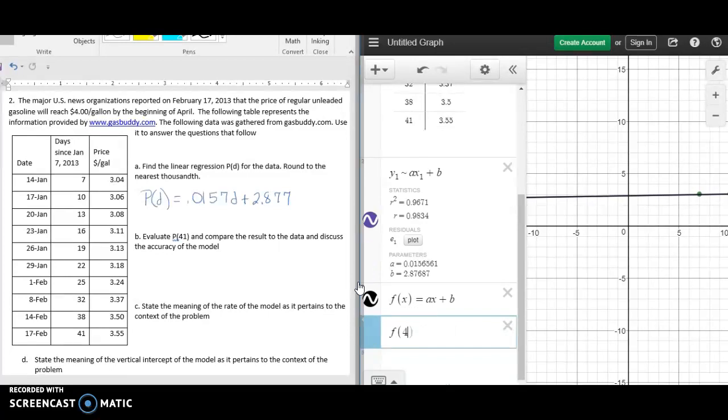Now we're going to evaluate the function at f of 41, and we get our answer of $3.52 based on this information.